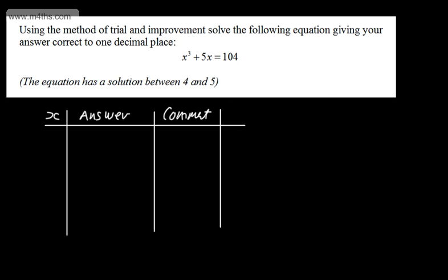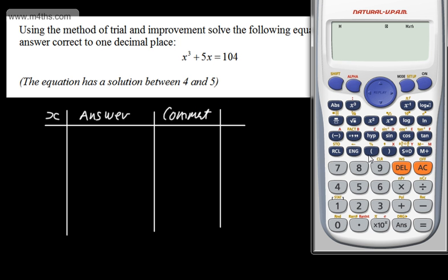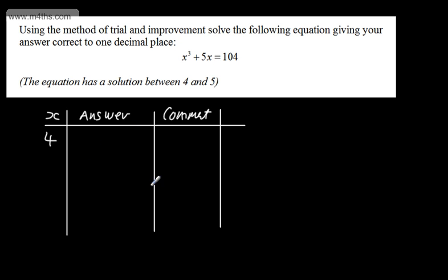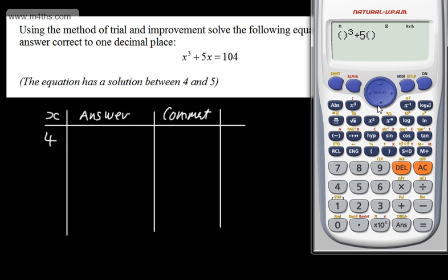If I set this up on the calculator, I'm going to have a bracket, then cube the bracket — I can use either the power button with 3 or the dedicated cube button — then add 5 lots of the number. Starting with x equals 4, we can write down the answer. Substituting this into the calculator gives me 84.